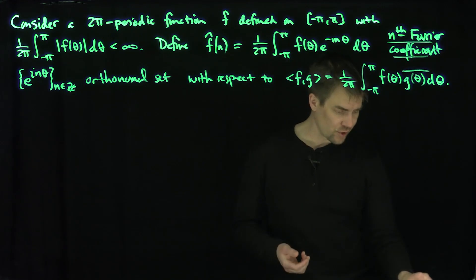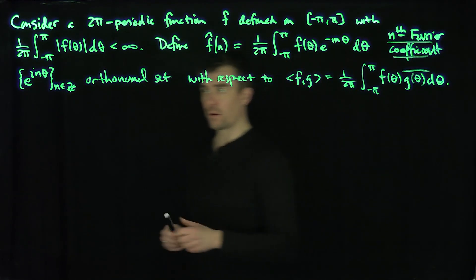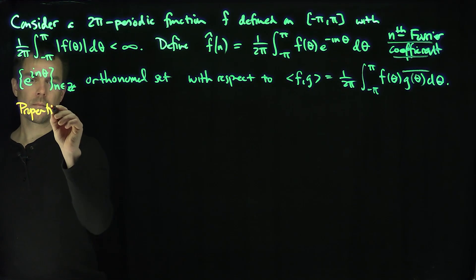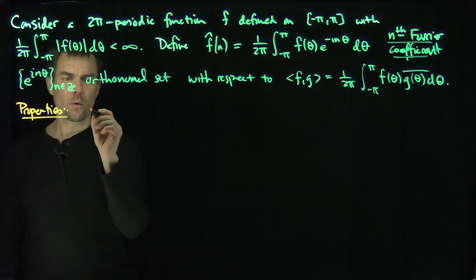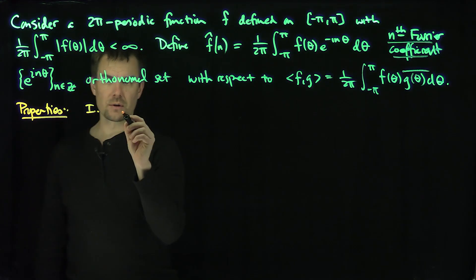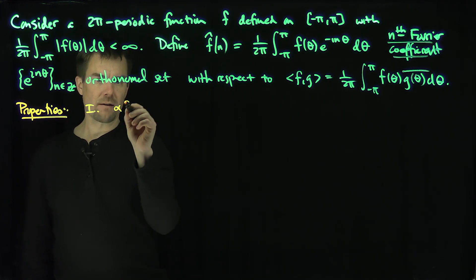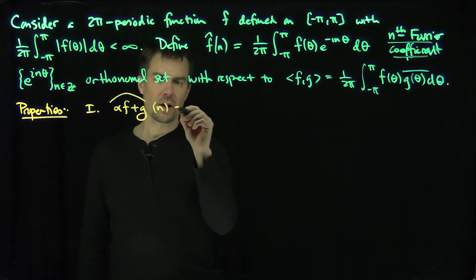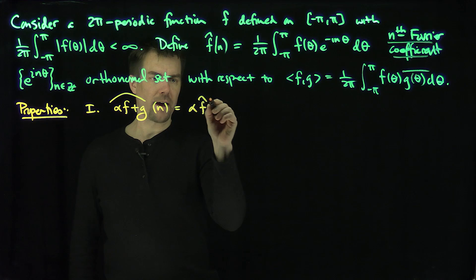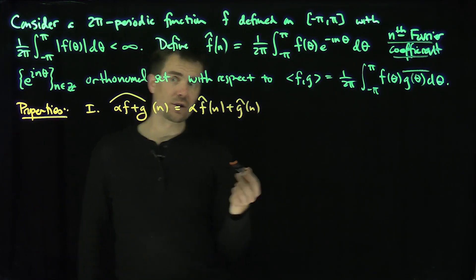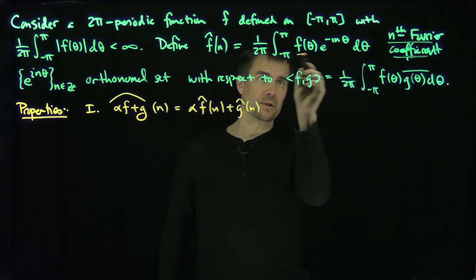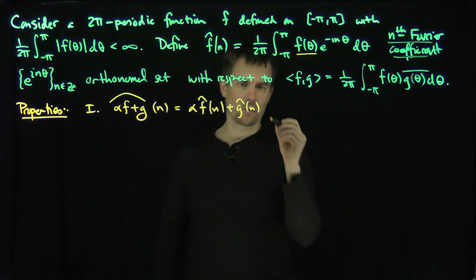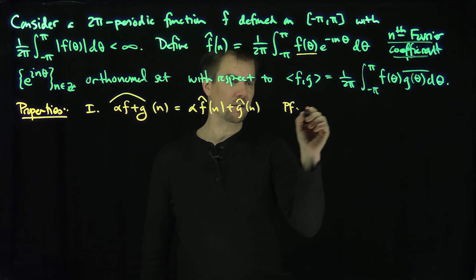We'd like to figure out when that Fourier series is actually convergent. To do that, let's talk about some properties of Fourier coefficients. The first trivial property is linearity: the Fourier coefficients are linear. In other words, if I have αf + g and find the nth coefficient of this linear combination, this is just α·f̂(n) + ĝ(n). That follows from the linearity of the integral — if I put αf + g into the integral, I can split it up by linearity.